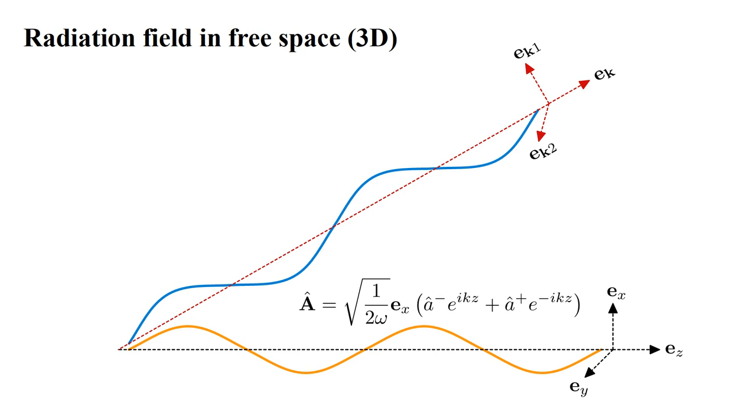and rotate it in space so that it propagates in any desired direction e_k. The rotation transforms e_x and e_y into e_{k,1} and e_{k,2}.